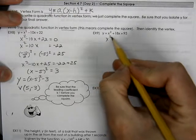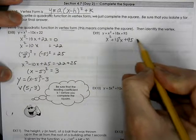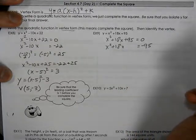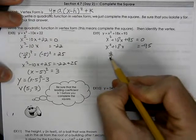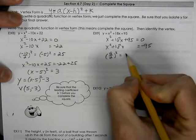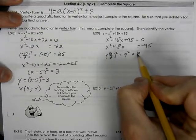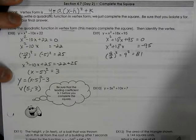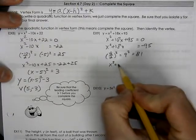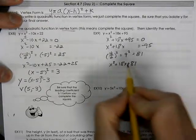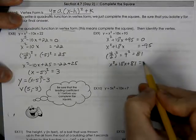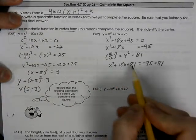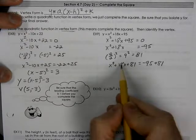We'll take our equation. We'll start out with 18x plus 95 equals 0. Subtract the 95 to the other side. Take your b value. Divide it by 2. So now we just found the value that is used to complete our square. So we add it to the left side.